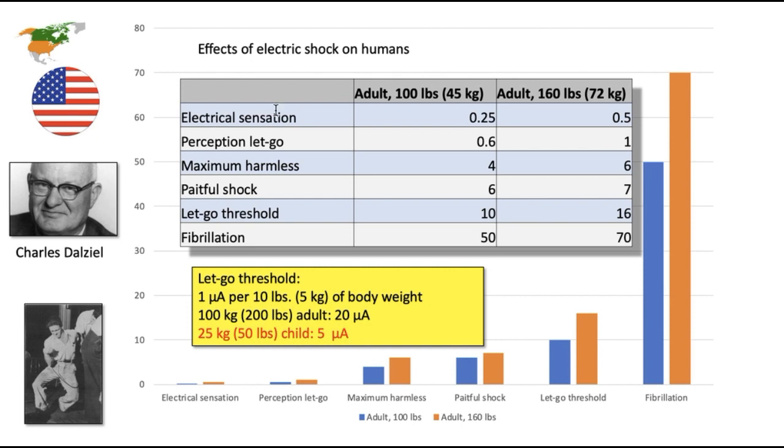After many repetitions, after many experiments, they determined that, for one thing, it depends on the weight of the person, on how much they weigh. So they averaged it to two groups of adults. Those who weigh 100 pounds, roughly 45 kilograms—most of those happen to be women. On average, women weigh less than men. And those who weighed 160 pounds or 72 kilograms.